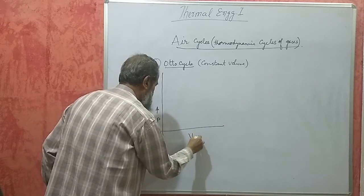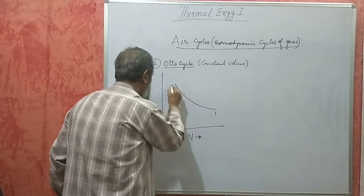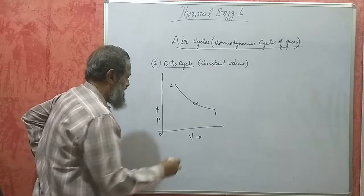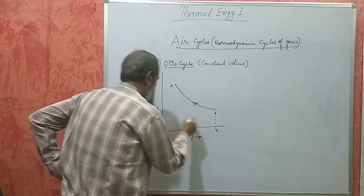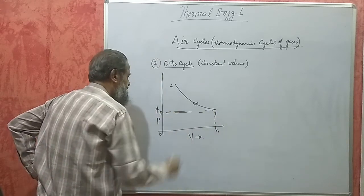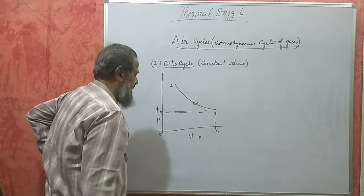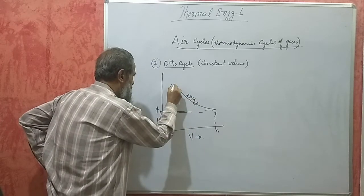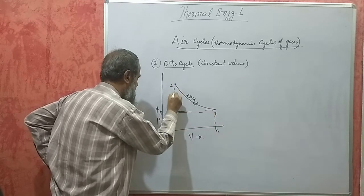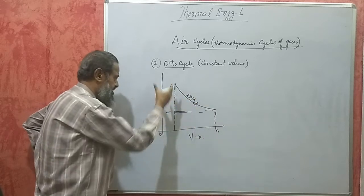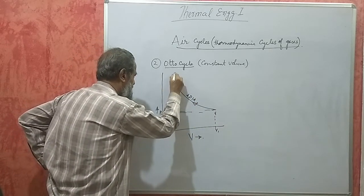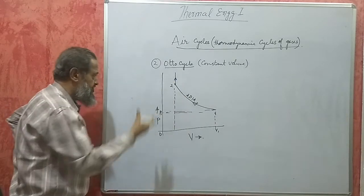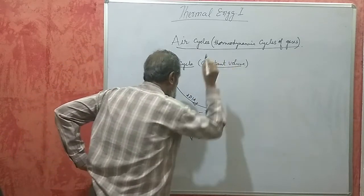The PV diagram for the Otto cycle: in a petrol engine, a mixture of air and petrol is taken into the cylinder at volume V1 and pressure P1. The charge is compressed by an adiabatic process (1 to 2) — this is the compression stroke. When the piston reaches point 2, the spark plug gives ignition, and combustion of fuel takes place at constant volume, which is why it is called the constant volume cycle.